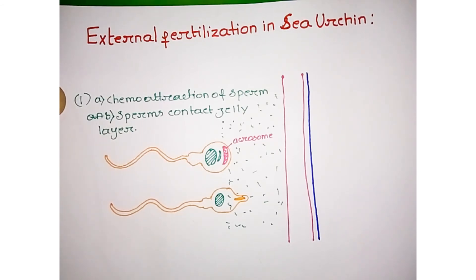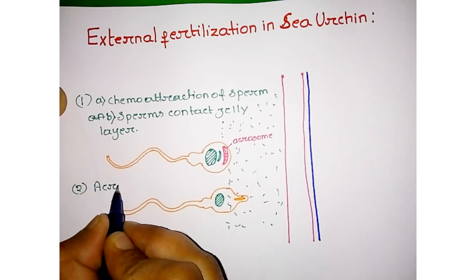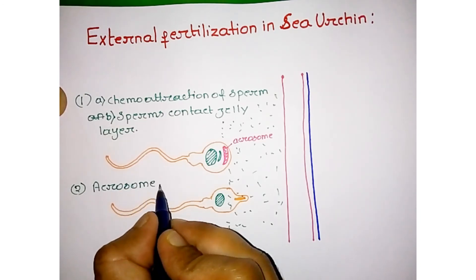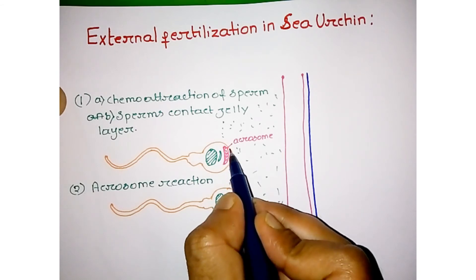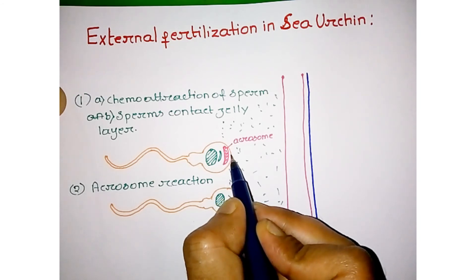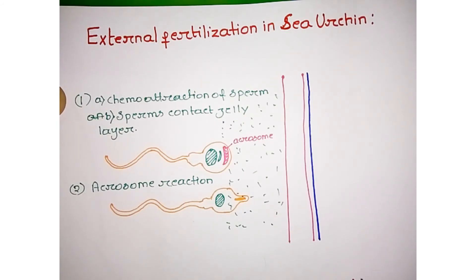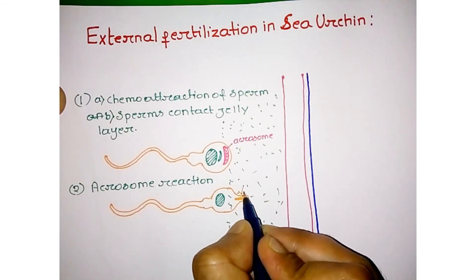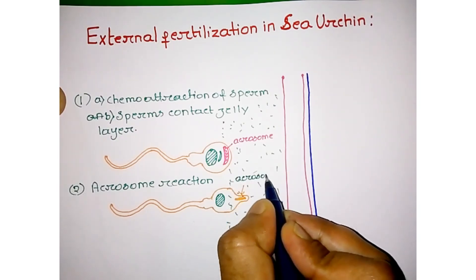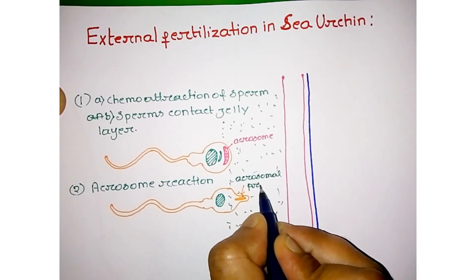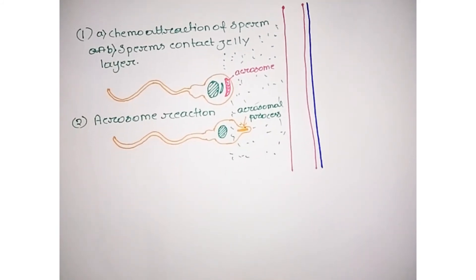The second step is the acrosomal reaction. In this step, the acrosomal vesicle fuses with the sperm membrane, and the formation of acrosomal vesicles occurs. This completes the formation of acrosomal vesicles, leading into the next step.